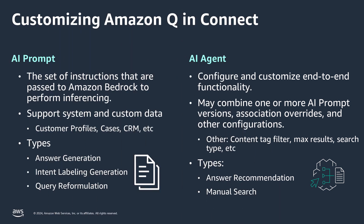To start, let's talk about AI prompts and AI agents. AI prompts are a set of instructions that guide Amazon Q&Connect's responses. They allow you to customize the tone and language, the decision-making processes, and the ability to use custom data.